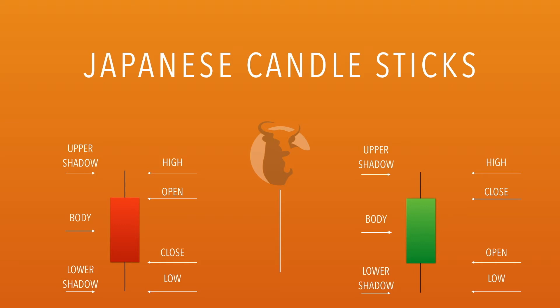We also see the body — the body is formed as price goes below the opening price. Now if the price goes all the way to the lowest point and then starts retracing back towards where the body is, it'll start leaving also a lower wick or lower shadow. The price will close below the opening price and we have now a full candle formed.